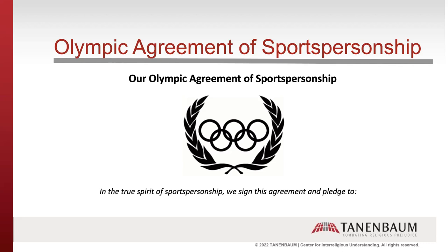As you begin this activity, you might consider reminding students of their prior work defining and providing examples of good sportsmanship. You can then either divide the class into groups or work as a unit to come to consensus on what promises students want to include in their Olympic agreement of good sportsmanship. An important note: we recommend using an Olympic agreement of good sportsmanship rather than an Olympic oath. For some students, taking an oath may have a particular connotation for religious reasons — they may be prohibited from taking oaths. So having students come to an agreement enables the inclusion of all students in this student-centered activity.